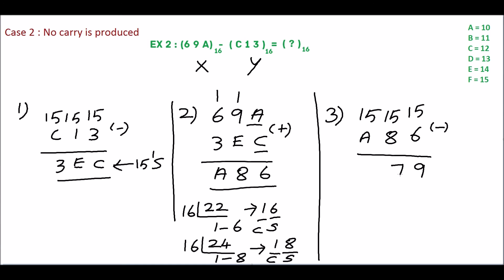15 minus 8 is 7. 15 minus A. A is equivalent of 10, so 15 minus 10 is 5.